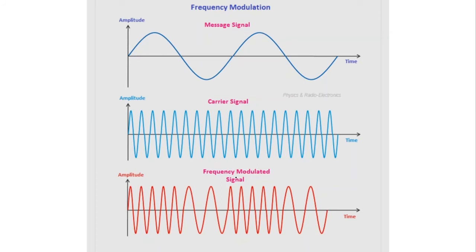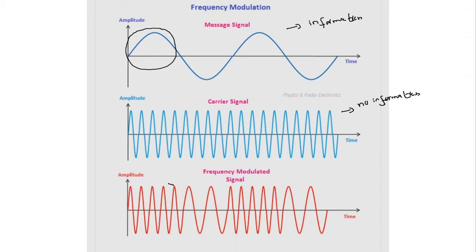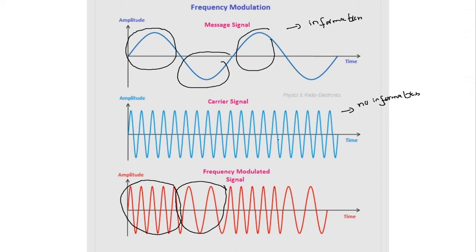In frequency modulation, the frequency of the carrier wave is varied with respect to the amplitude of the message signal. Again we have the message signal or baseband signal containing information, and the carrier signal with constant amplitude and constant frequency containing no information. The resulting frequency modulated signal has its frequency changed with respect to the amplitude of the message signal. For the positive cycle we have a higher frequency, and for the negative cycle we have a lower frequency.